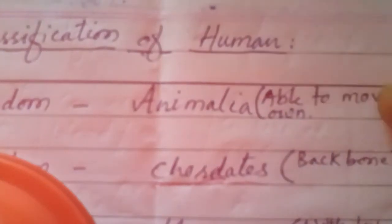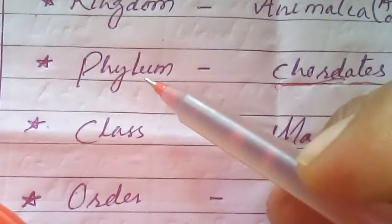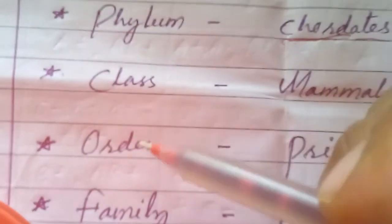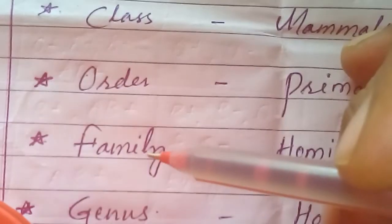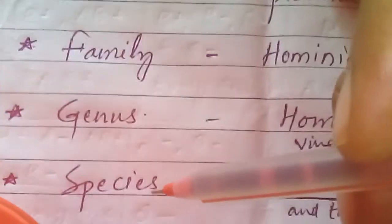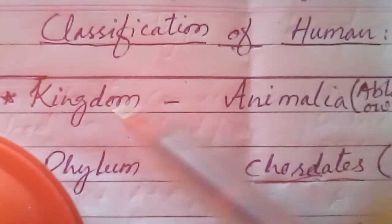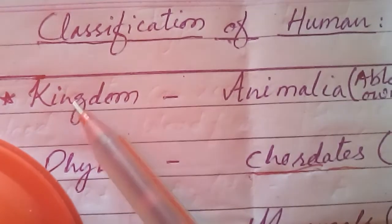The classification of the human can be easily understood by the following points: Kingdom, Phylum, Class, Order, Family, Genus, and Species. Let's see the detailed account of all these points regarding the human body.